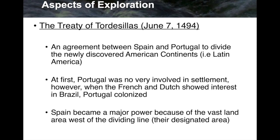Now we're going to talk about who was going to own what in the New World when it was discovered and different European countries decided they wanted to get involved. The Treaty of Tordesillas was ratified on June 7th, 1494. It was an agreement between Spain and Portugal to divide the newly discovered American continents — what we would call Latin America. Portugal was not very involved in settlement at first; however, when the French and Dutch began to show interest in Brazil, Portugal colonized.